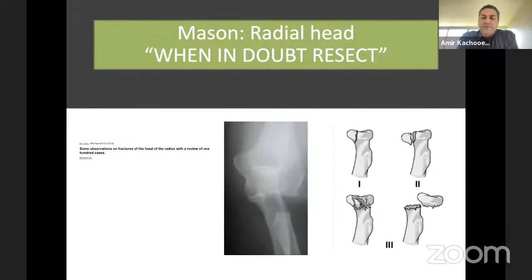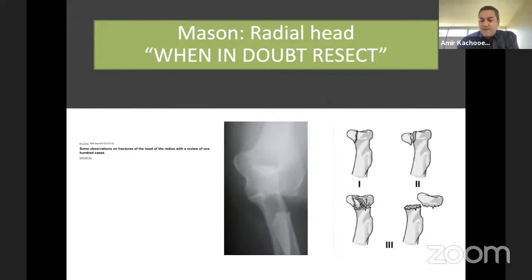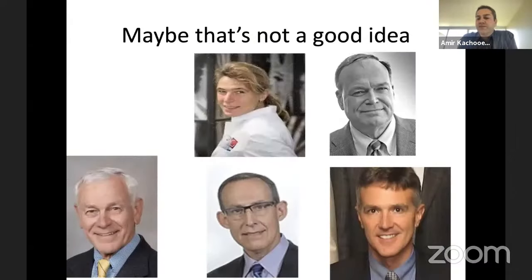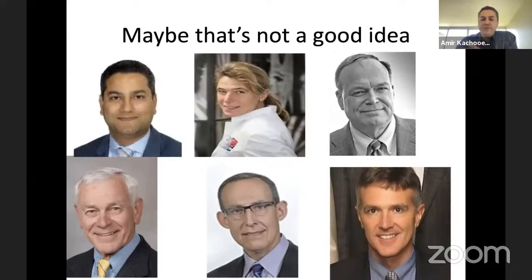Let's start with the history. Mason is probably a well-known person. He's not the first, but his paper has been cited many times regarding his classification of radial head fractures. He mentioned that when you have a radial head fracture, when in doubt, take it out — resect. This was simply followed over the years by different surgeons, assuming there is no need for keeping it in place or fixing it. However, many researchers came along and showed that simply taking it out without doing anything is probably not a good idea.